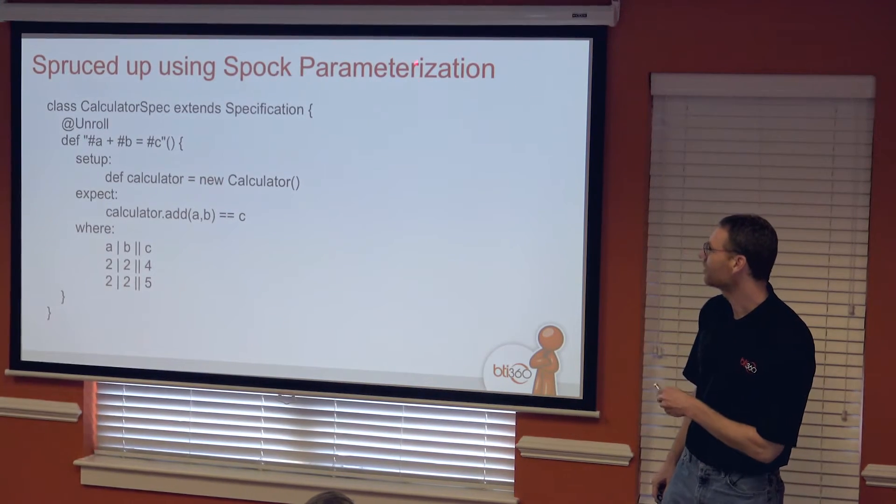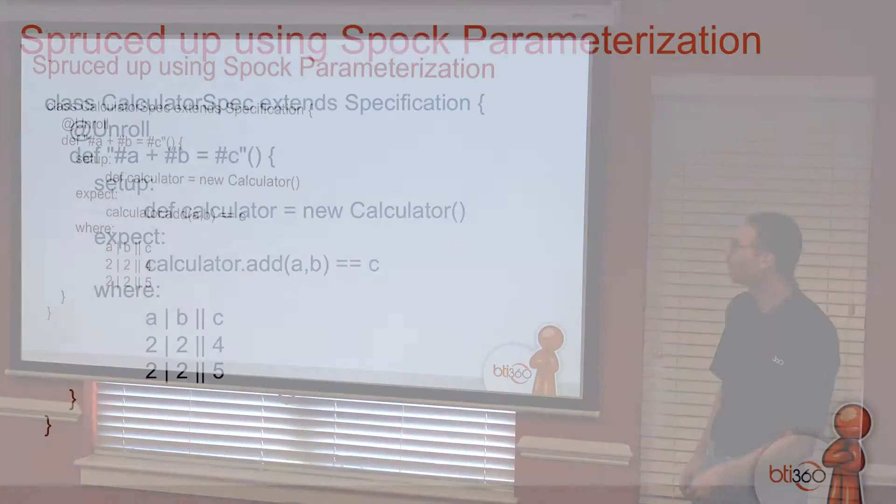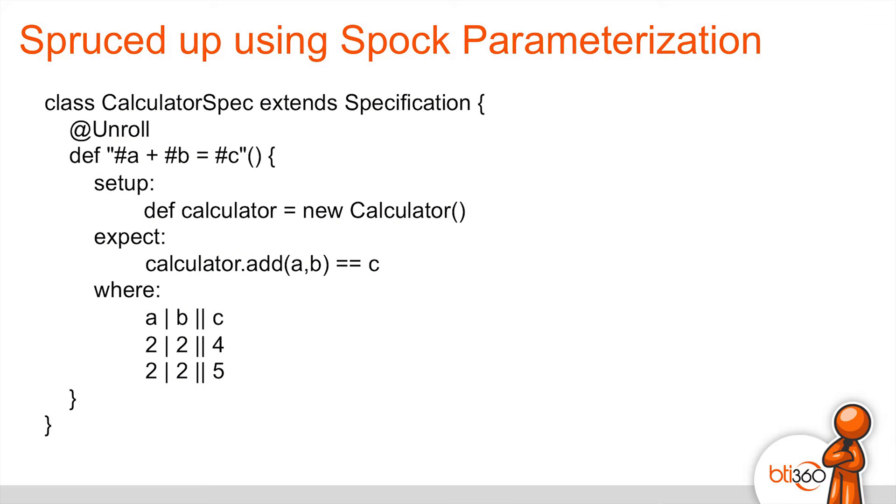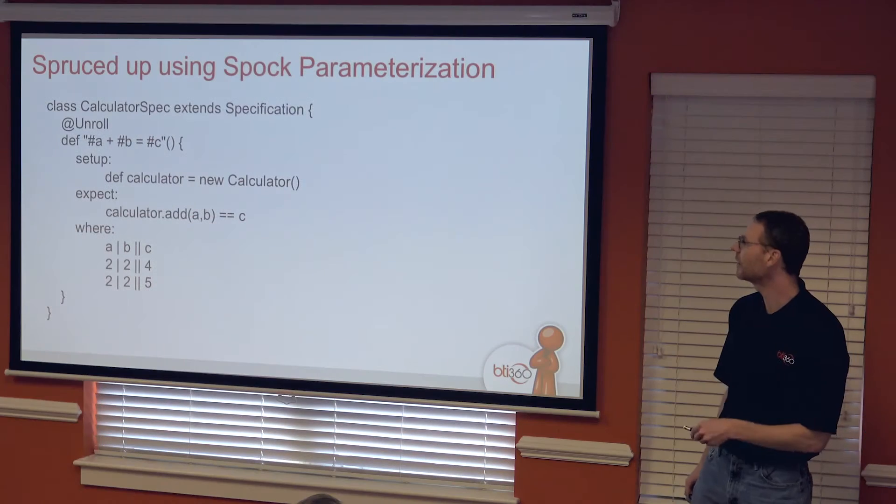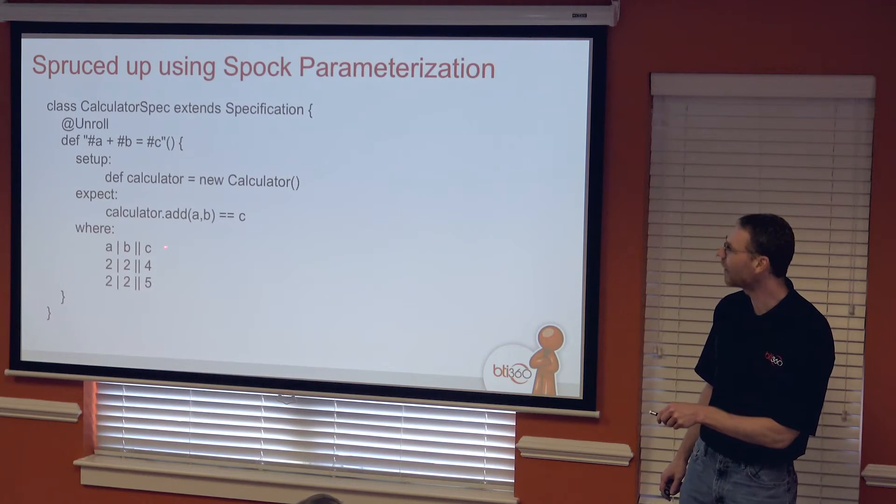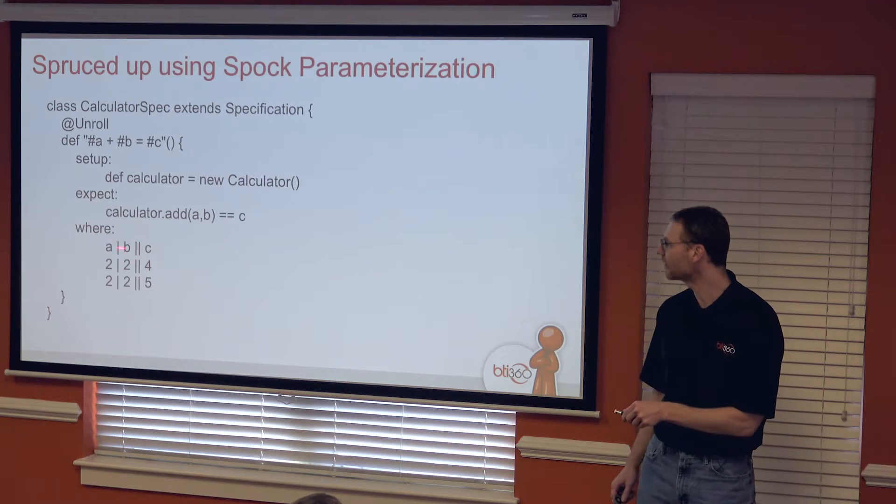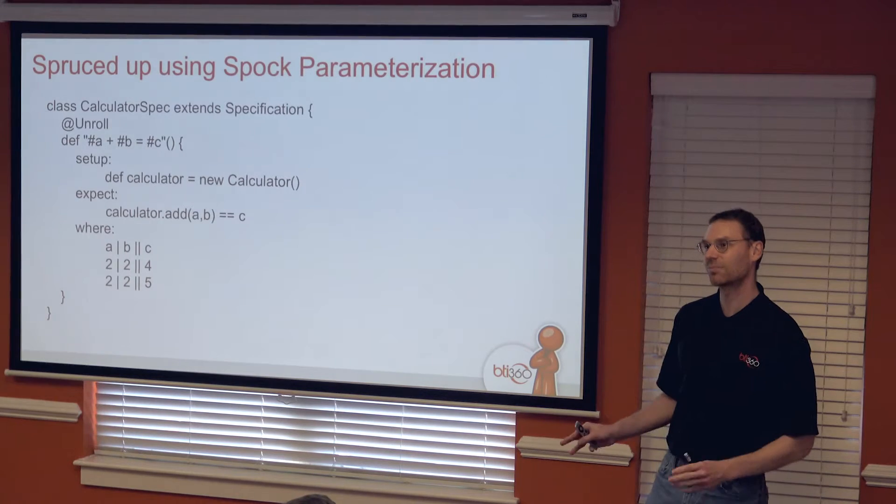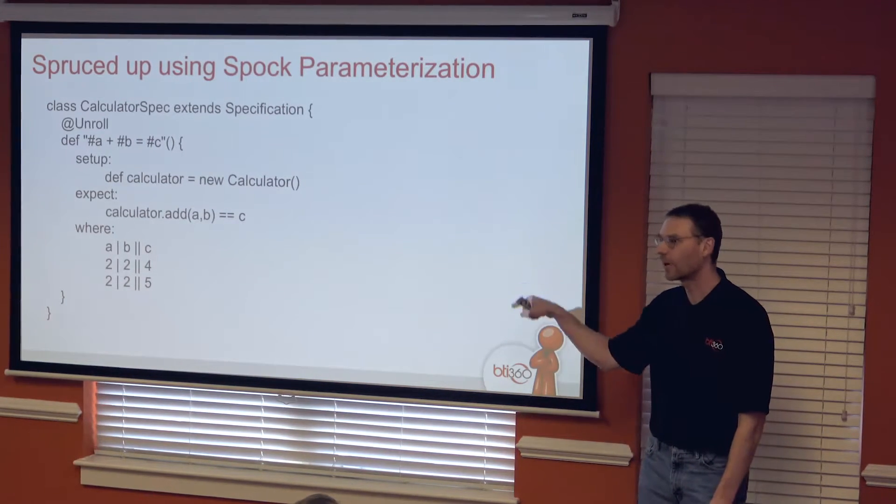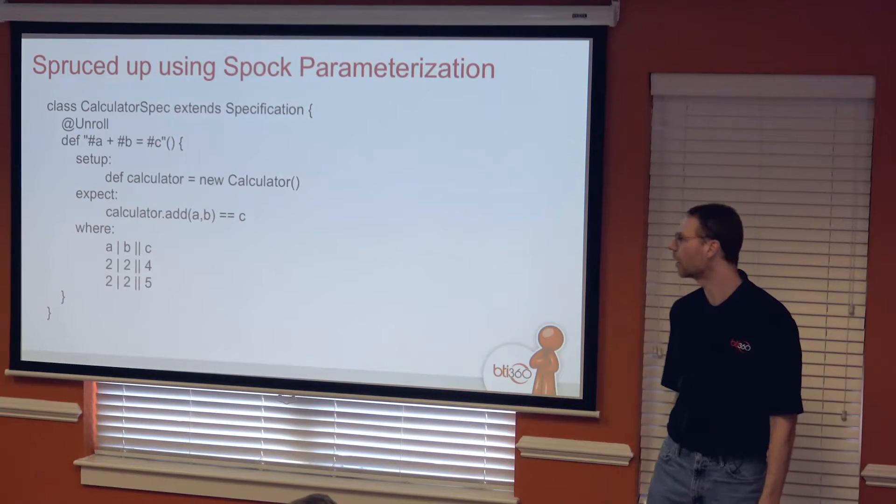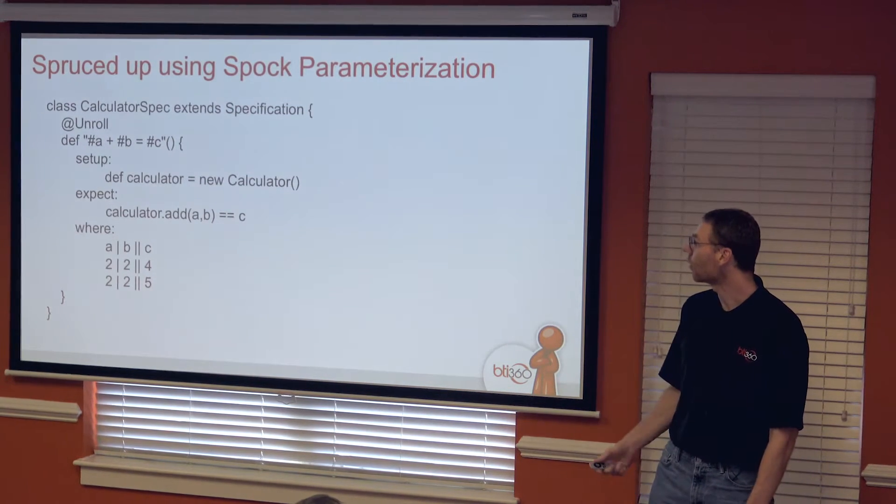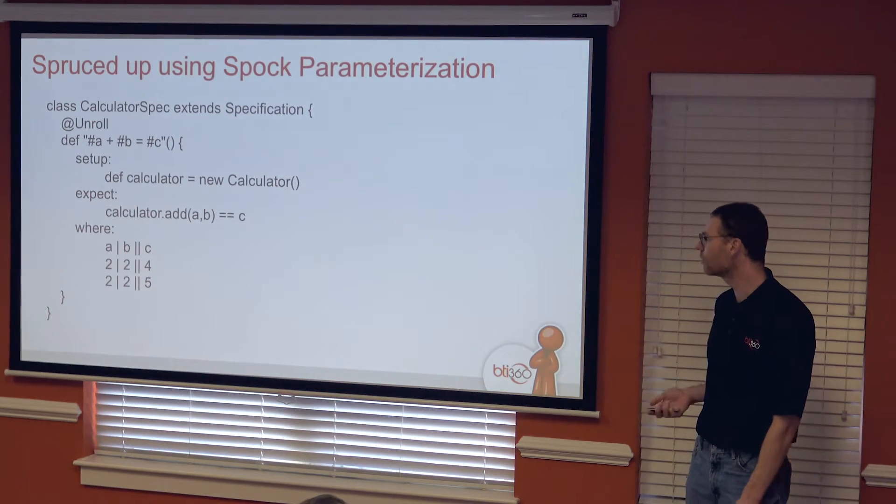All right. Cooler stuff. Parameterization. There's this little keyword called unroll, and then we've got this funny-looking method name. Spock makes use of groovy, and groovy lets you put just about anything into a method name, except dollar signs, but that's a JVM limitation. What's actually happening here is this looks very similar to the previous one, but wait a second. Where did A, B, and C get defined as variables? Well, actually, they're being defined down here. In this tabular format, the double bars, that's just frosting. You can put single pipes there, double pipes, just sort of a way to mark differential things like C as a result. So, 2 plus 2, 4, 2, 2, 5.